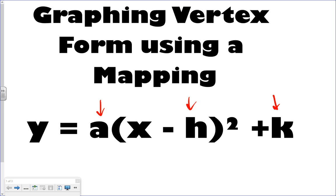Now I'm using a microphone here today, so I don't know how this is going to work out quality-wise, but we'll see. So the biggest thing when graphing vertex form using a mapping is to be able to pick out your h and your k, which is your vertex. And then also being able to pick out your a value, which is right here.